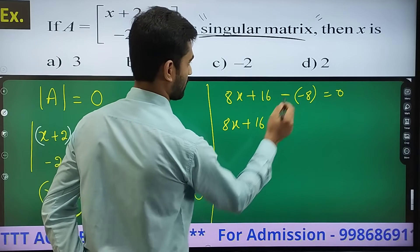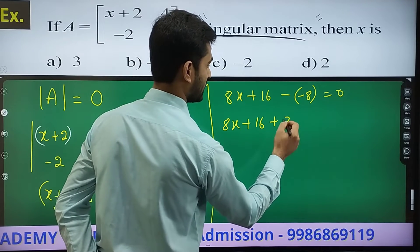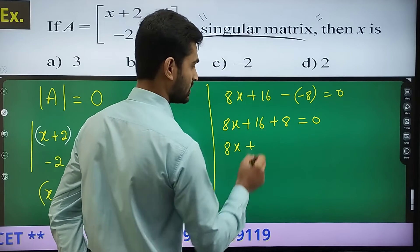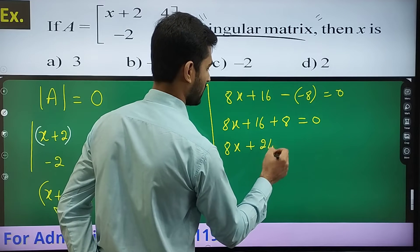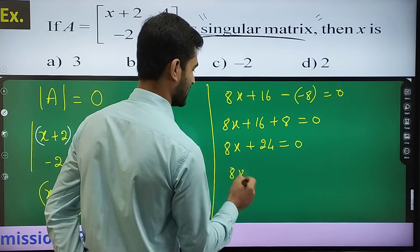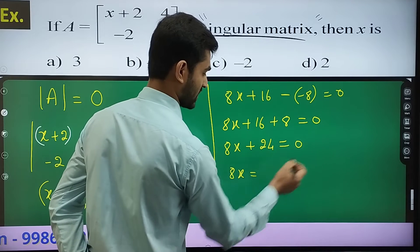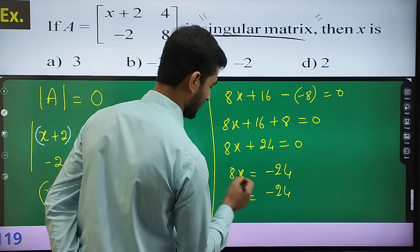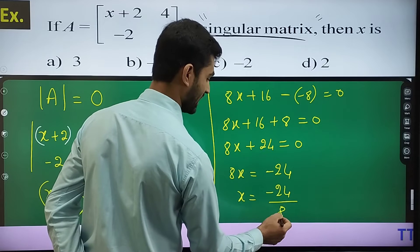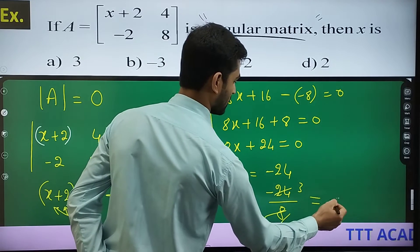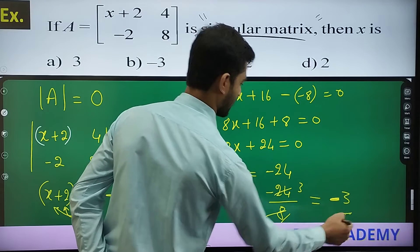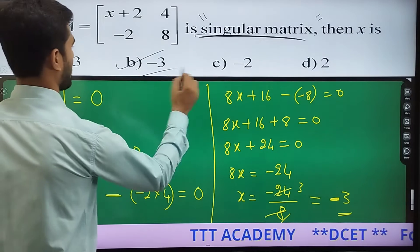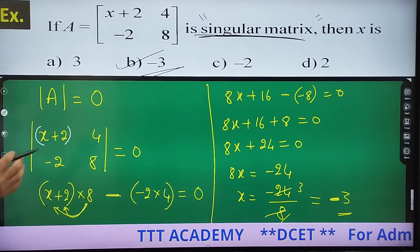So 8X plus 16 plus 8 equals 0, that is 8X plus 24 equals 0. Therefore 8X equals minus 24. Therefore X equals minus 24 divided by 8. The minus sign is kept the same, that is X equals minus 3. The value of X is minus 3. This is a similar kind of question.